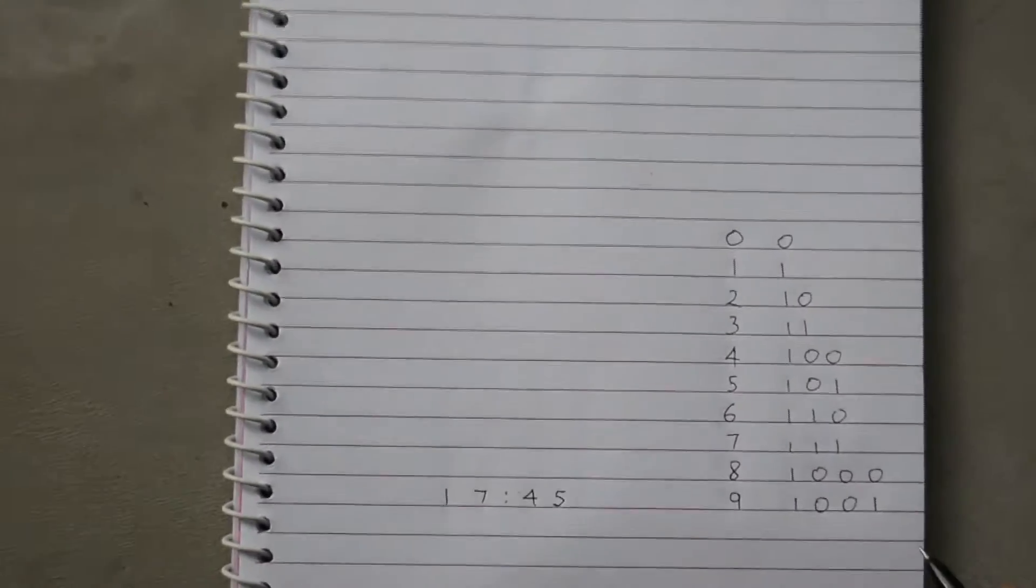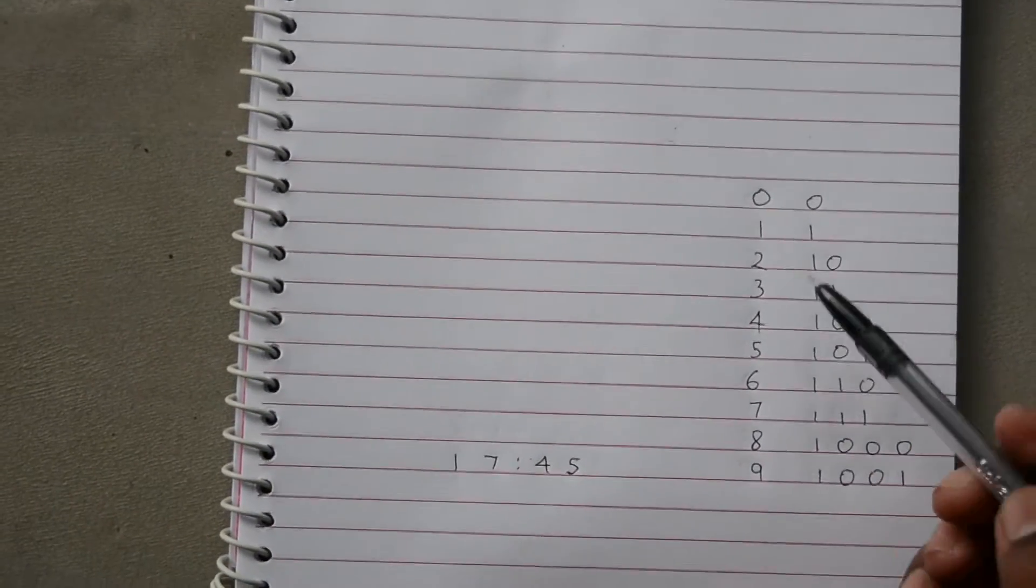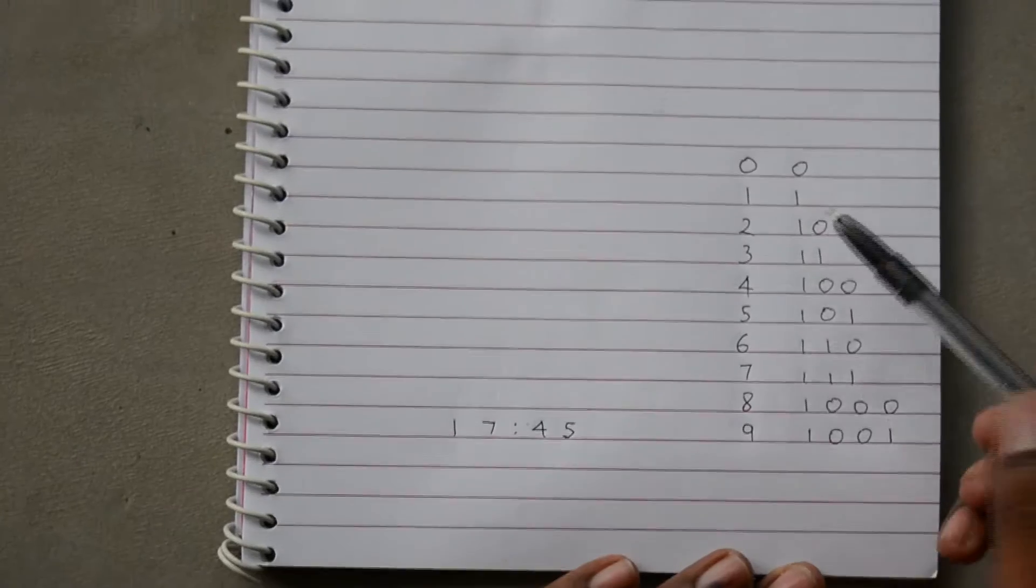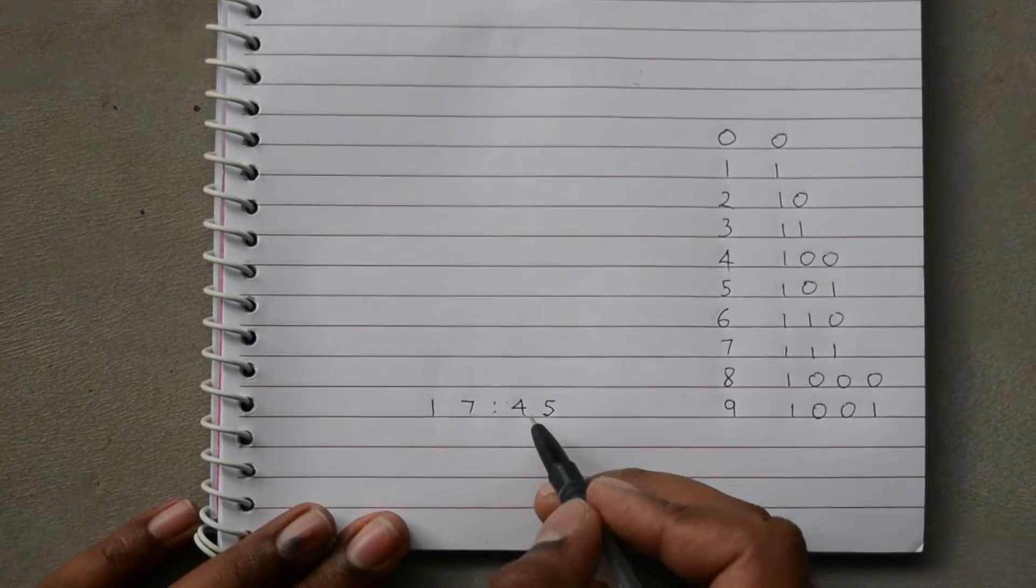So a binary clock shows the time in binary format, that is in zeros and ones. So I have got the conversion here for decimal to binary and suppose the time was 1745, that is 5:45.